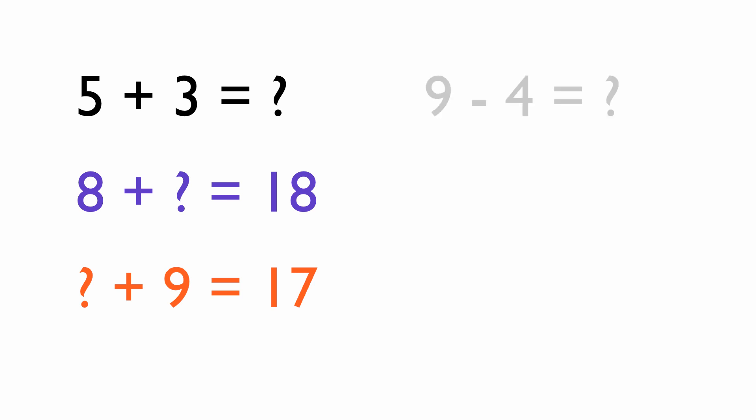And it's the same for take aways. So 9 subtract 4 equals something. Here's one where we don't know what the change is: it's 19 and then we're taking away something, and that leaves us with 12. And this one where we don't know the starting number: something take away 8 equals 4.